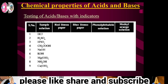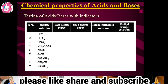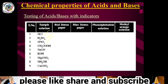Liquid indicators: one is methyl orange and another one is phenolphthalein. These are types of indicators used in acid-base systems.